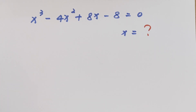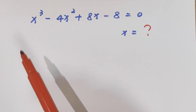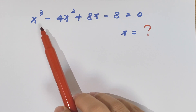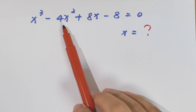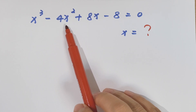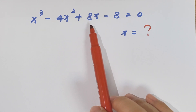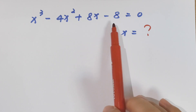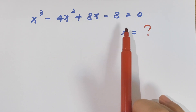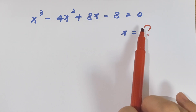Hello everyone, welcome to Math4U. How to solve x cubed minus 4x squared plus 8x minus 8 equals 0.